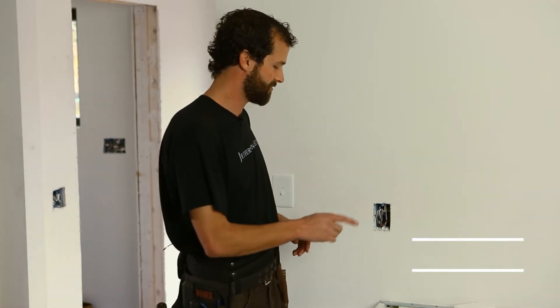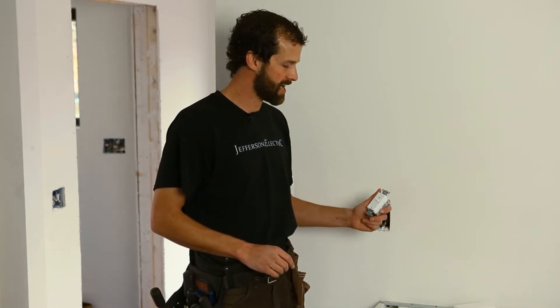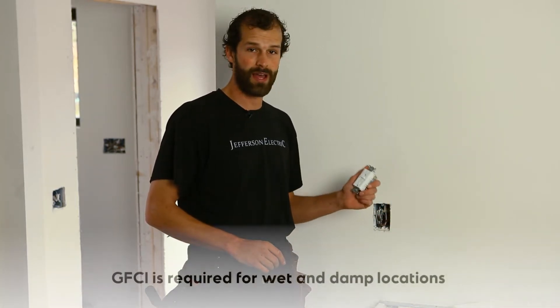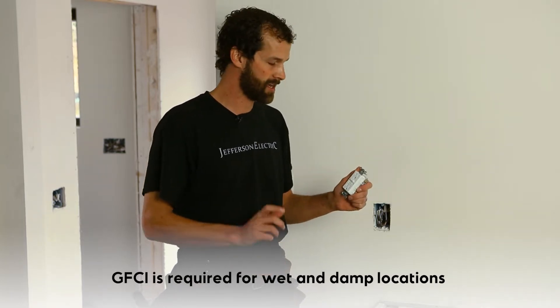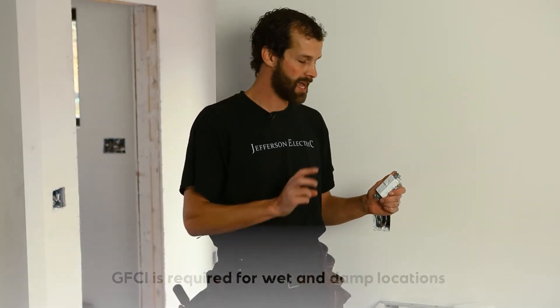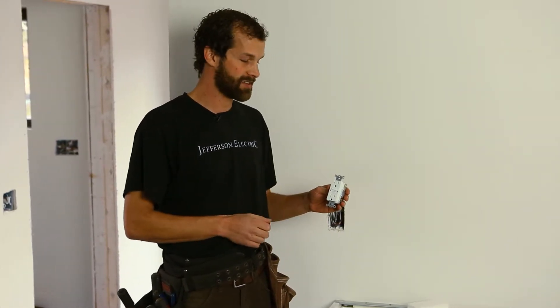Now here we start the outlets that are serving our kitchen countertop. The first outlet we have is a GFCI receptacle. GFCI is a code requirement for wet and damp locations. It monitors the difference between hot and neutral, and if there's a current imbalance more than five milliamps, this device will trip at the device. You'll see a test and a reset button. It'll trip at the device to cut power to anything that's plugged into it for safety purposes.